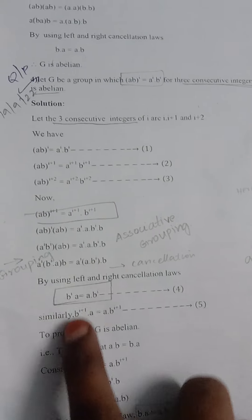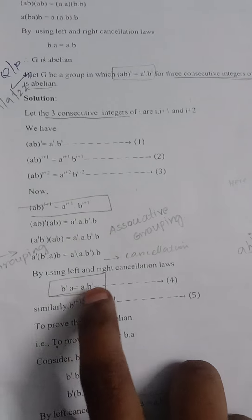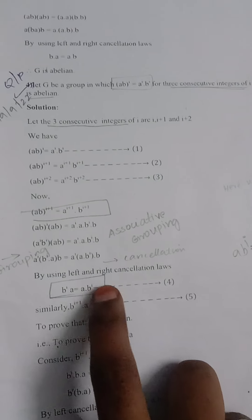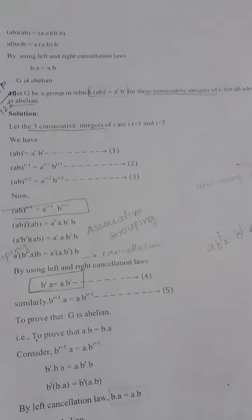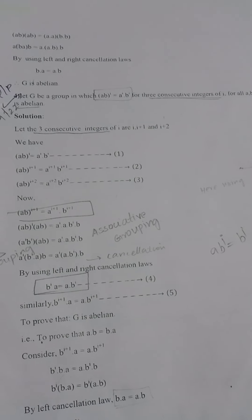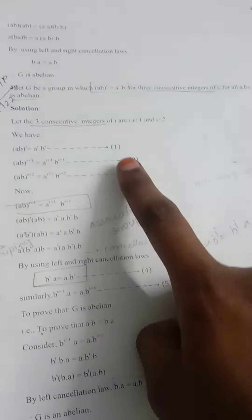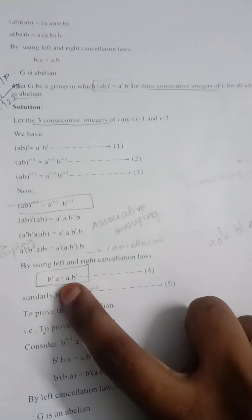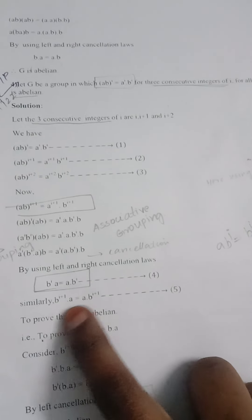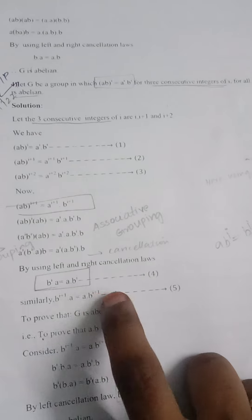The remaining terms give us b^i * a = a * b^i. This is our first key result, showing a commutativity-like property. Similarly, we apply the same process using the next consecutive integer i+1.